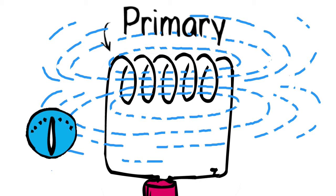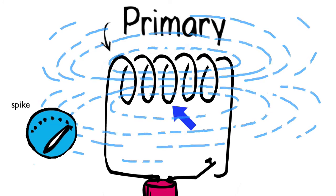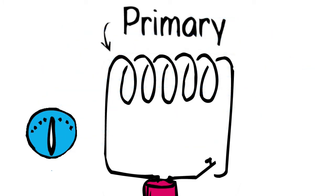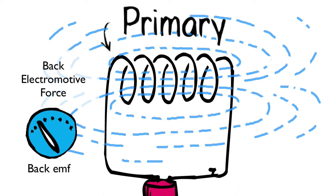Likewise, when you turn off the electric current, the magnetic field changes from something to nothing. There again is that spike in voltage, which has a name. We call it the back electromotive force, or back EMF.